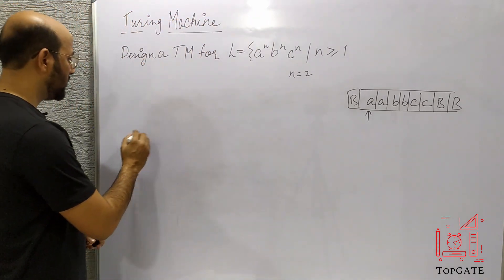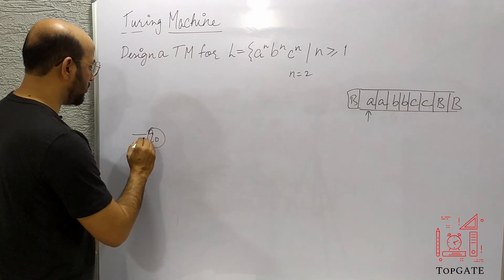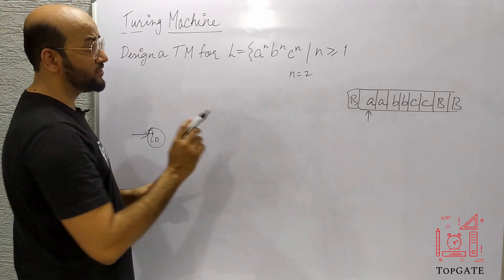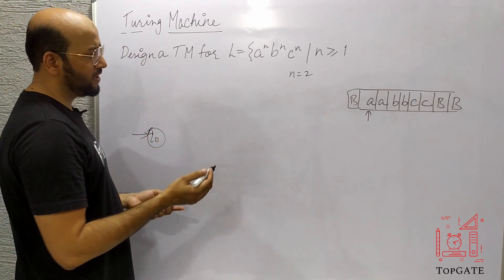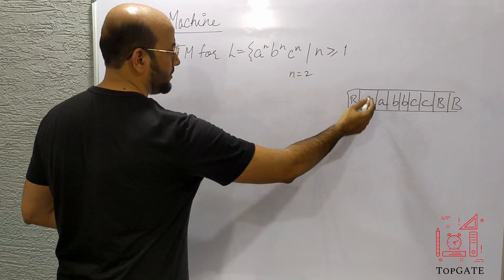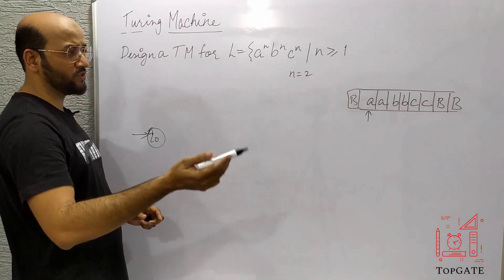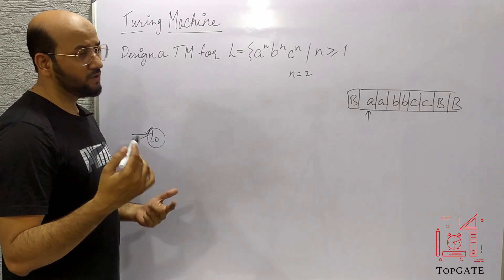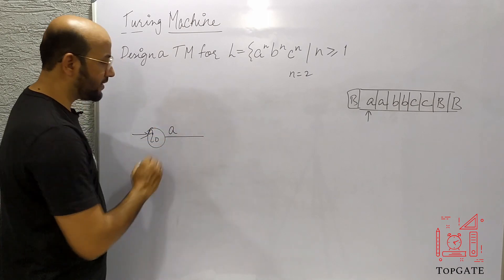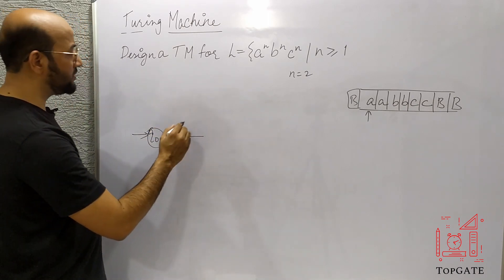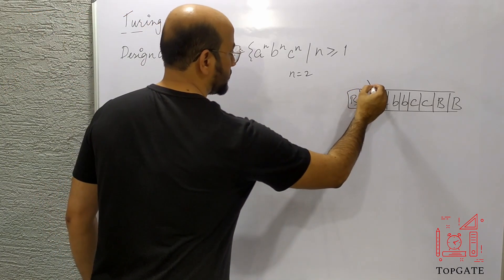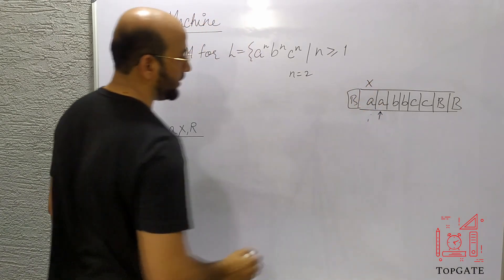We are at state Q0 initially and the element to read is A. The logic says: read this A and change it to X, just to show that we have processed this particular A. So I change it to X and move to the right direction. This A is changed to X and the pointer now points to the next A.